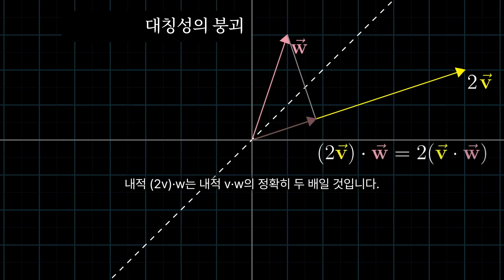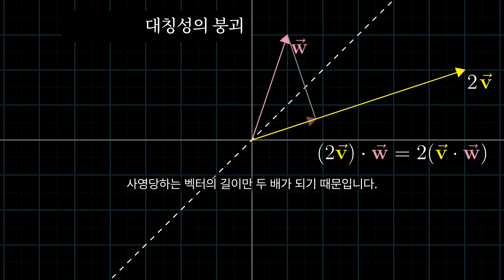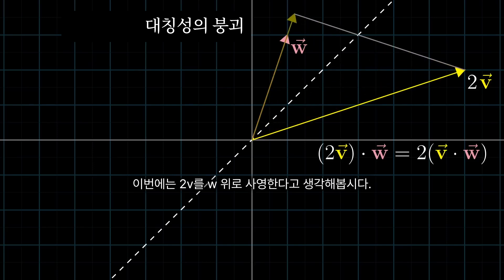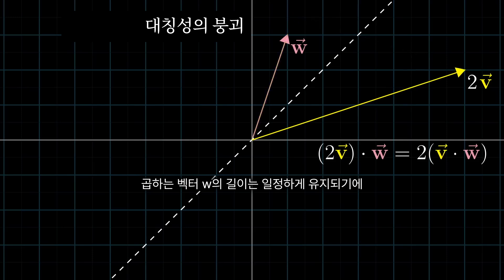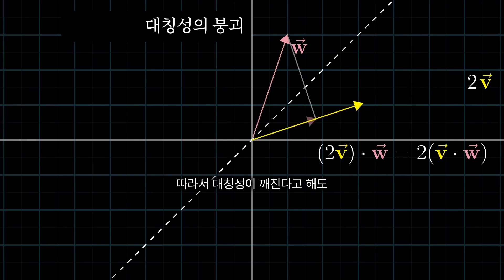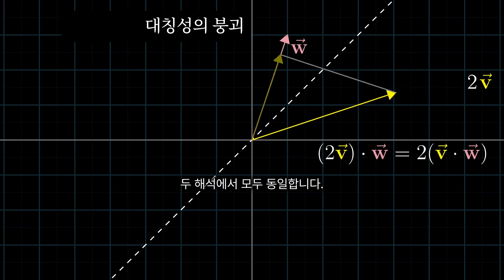This is because when you scale v by 2, it doesn't change the length of the projection of w, but it doubles the length of the vector that you're projecting onto. On the other hand, if you were thinking about v getting projected onto w, the length of the projection is the thing that gets scaled when we multiply v by 2, but the length of the vector that you're projecting onto stays constant. So the overall effect is still to just double the dot product. So even though symmetry is broken in this case, the effect that this scaling has on the value of the dot product is the same under both interpretations.